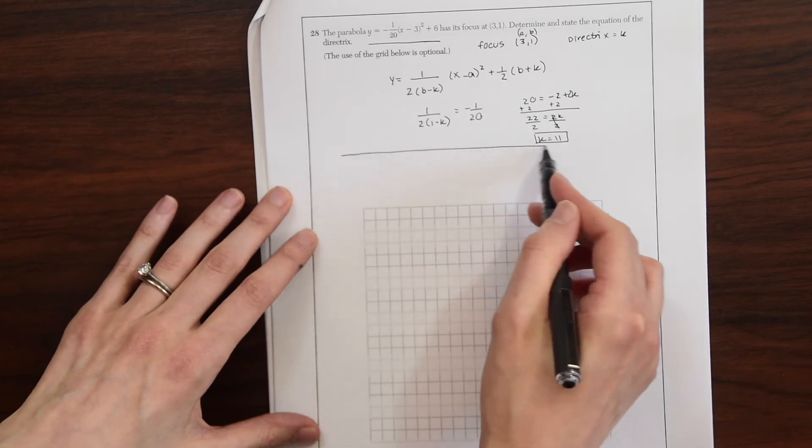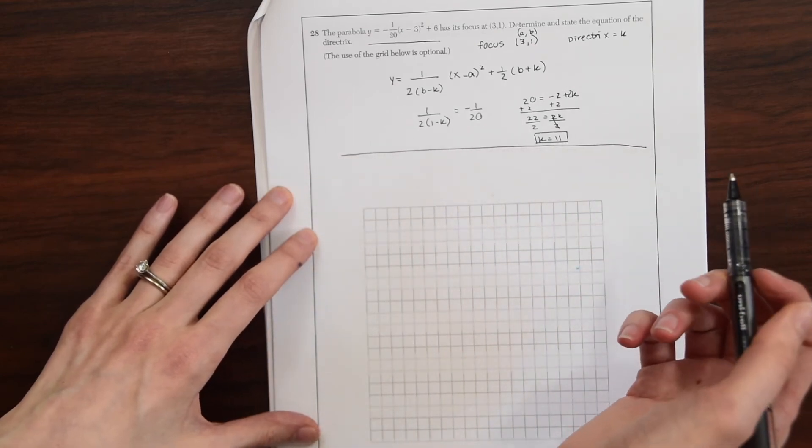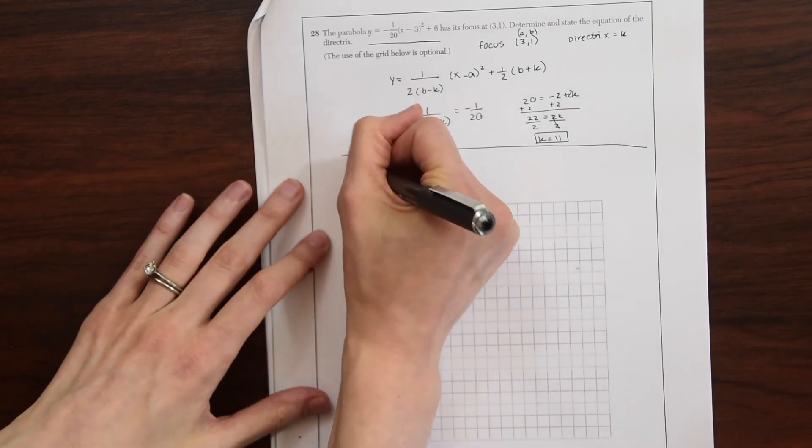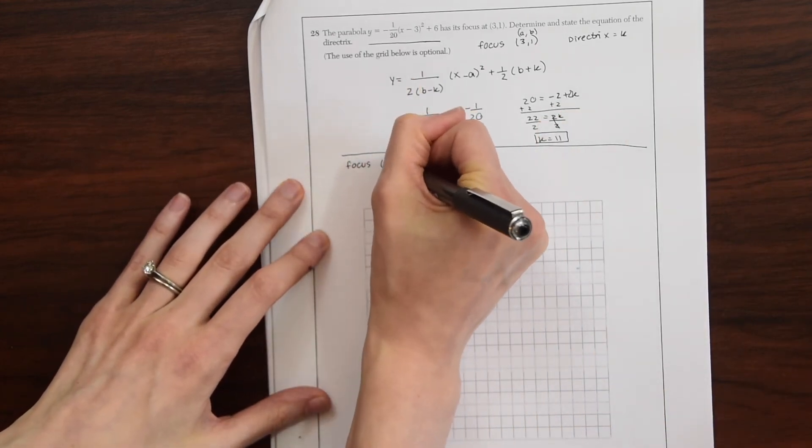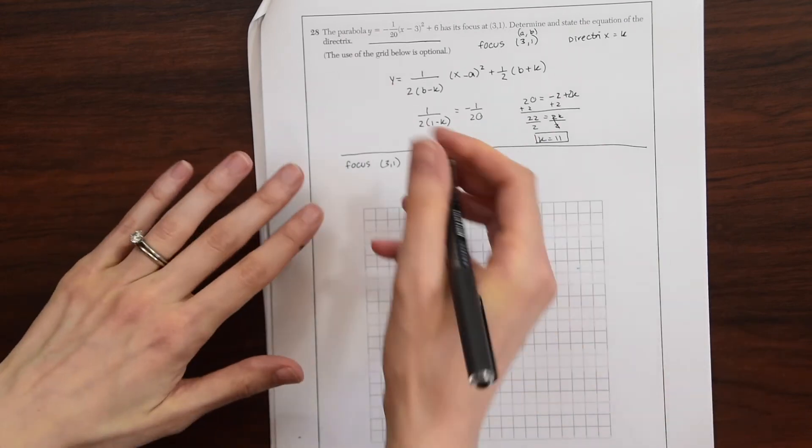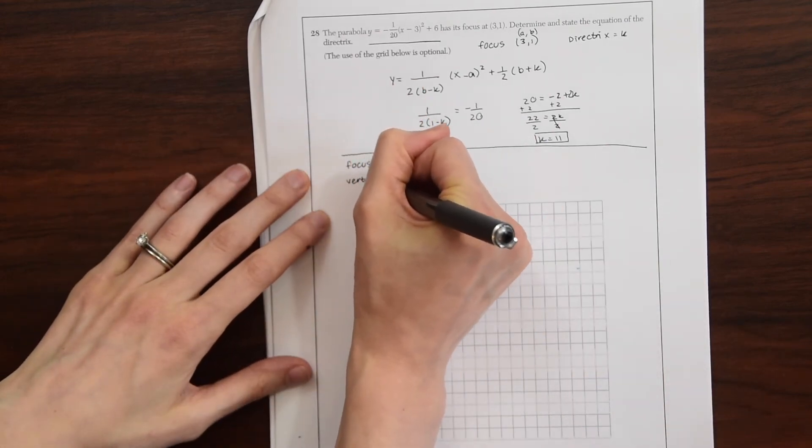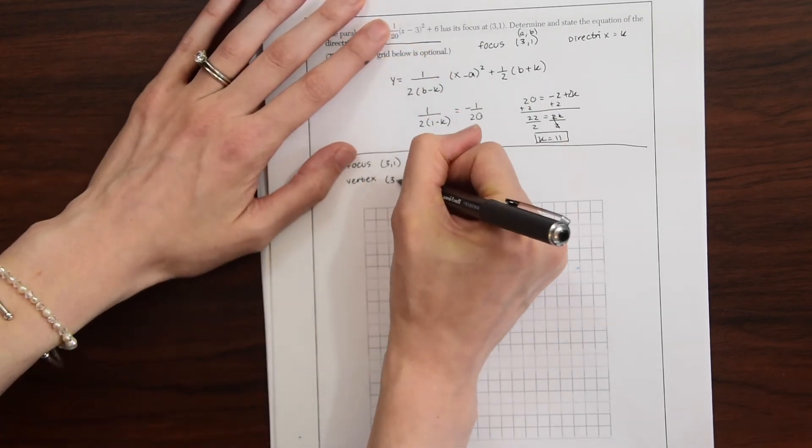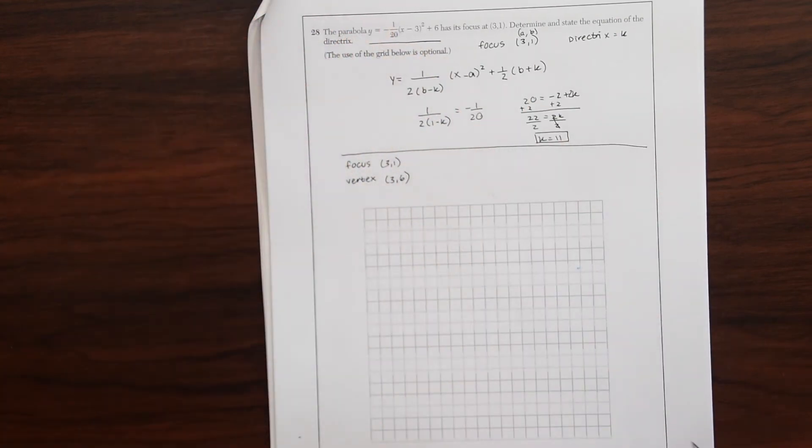So another way to get it is also by graphing. To do that, we're going to use the focus again, which they give us focus at 3, 1. And then we're also going to take out the vertex. So because they gave us this equation, we can see that the vertex is at 3, 6. And we could draw this out.